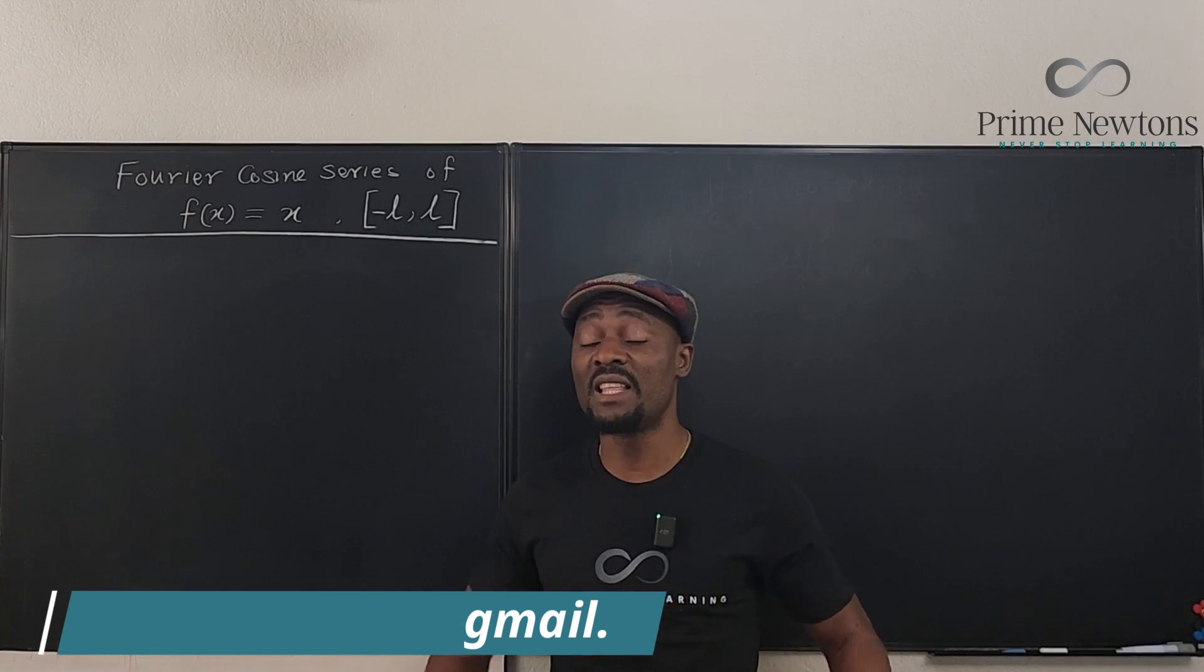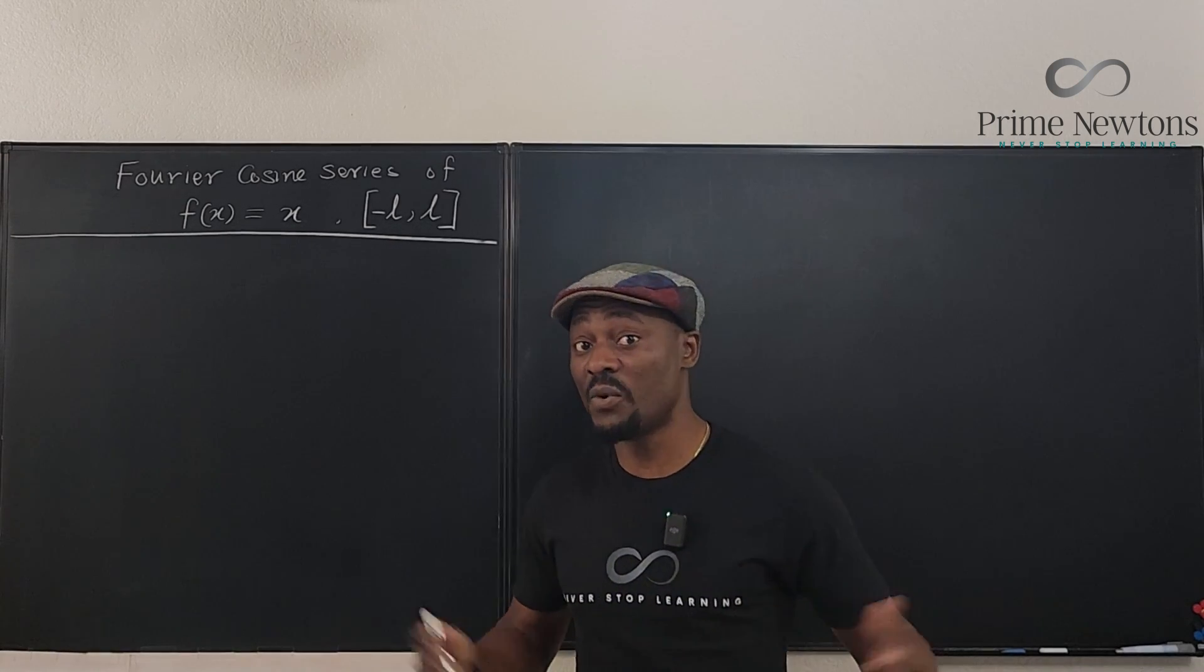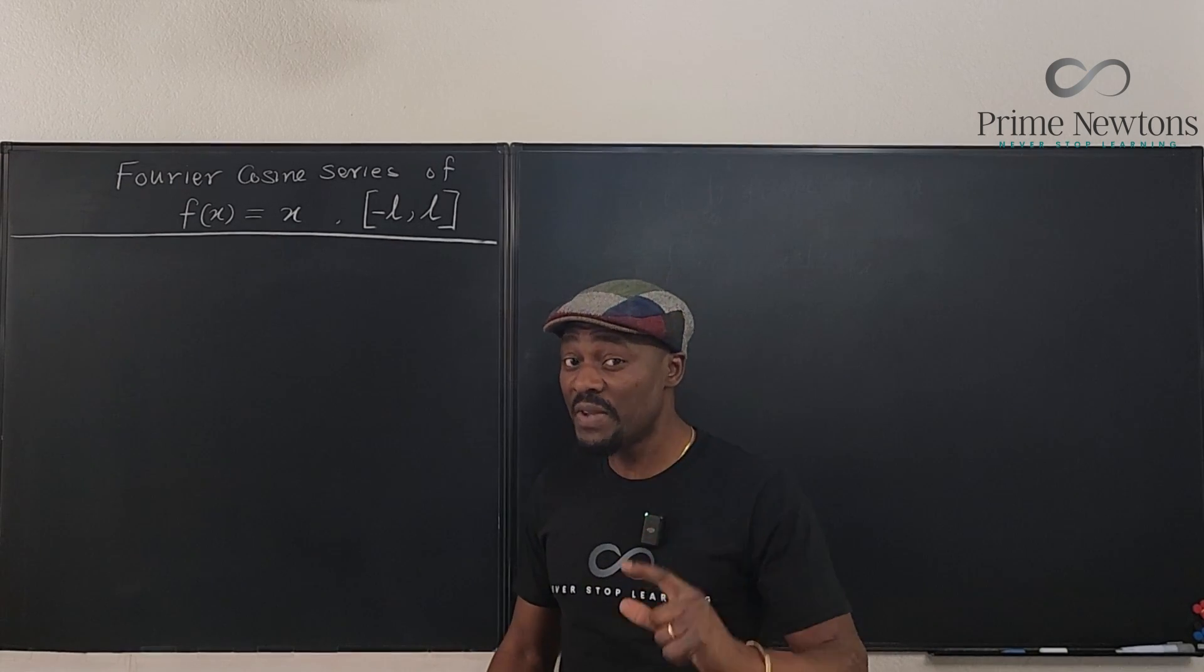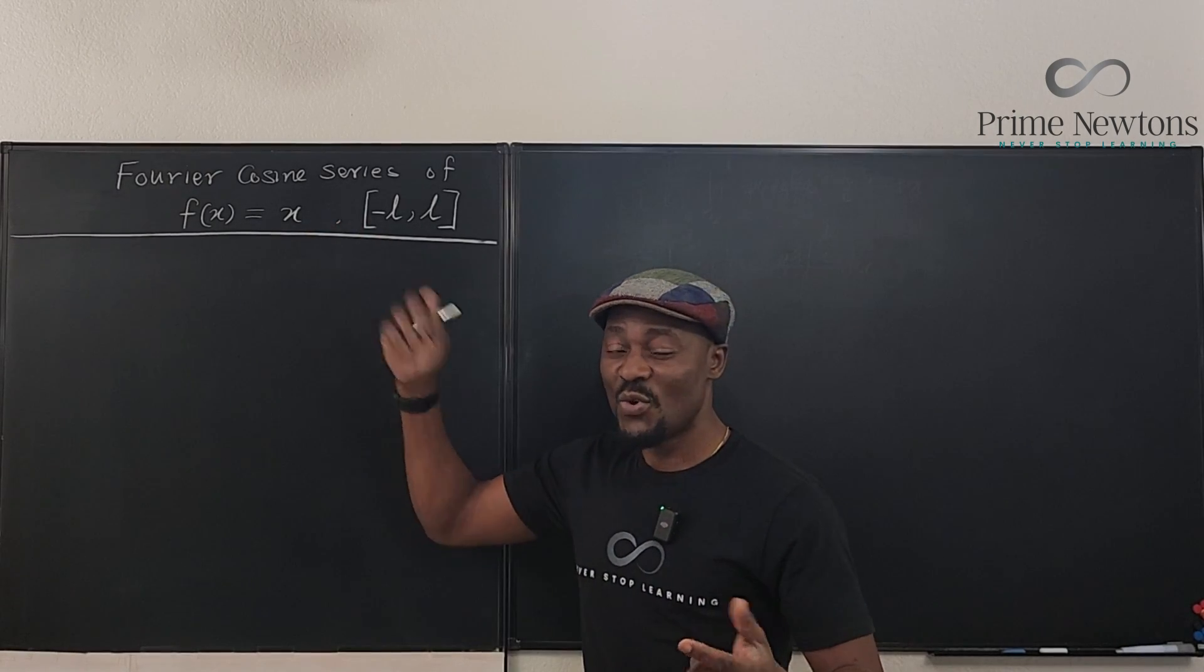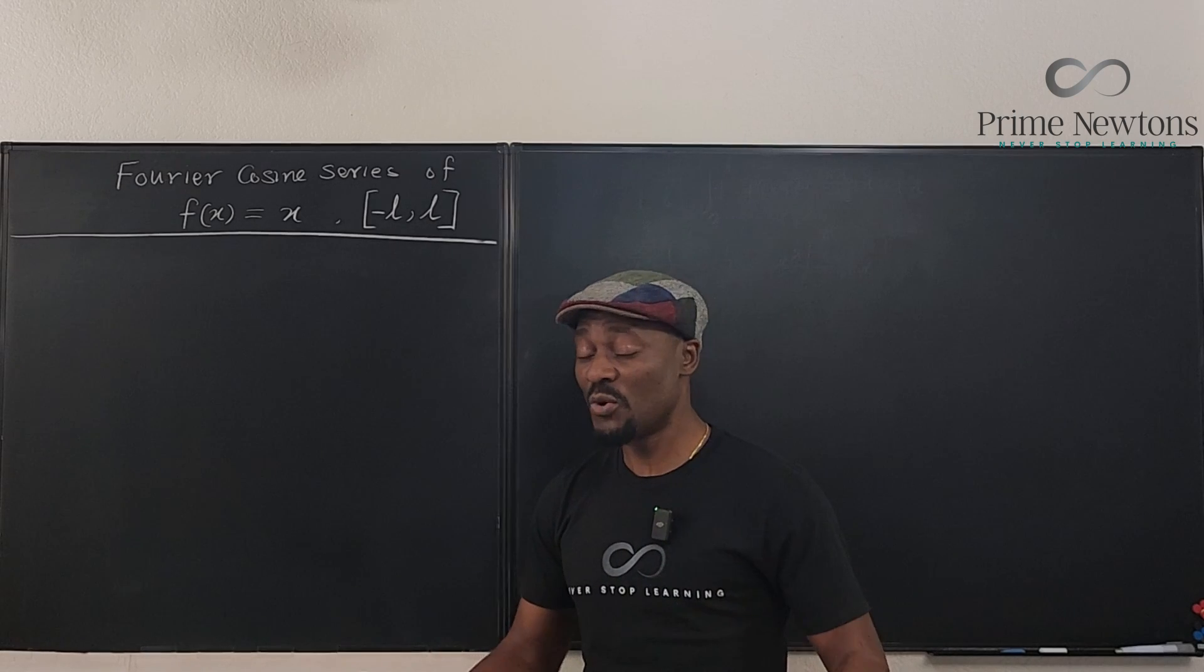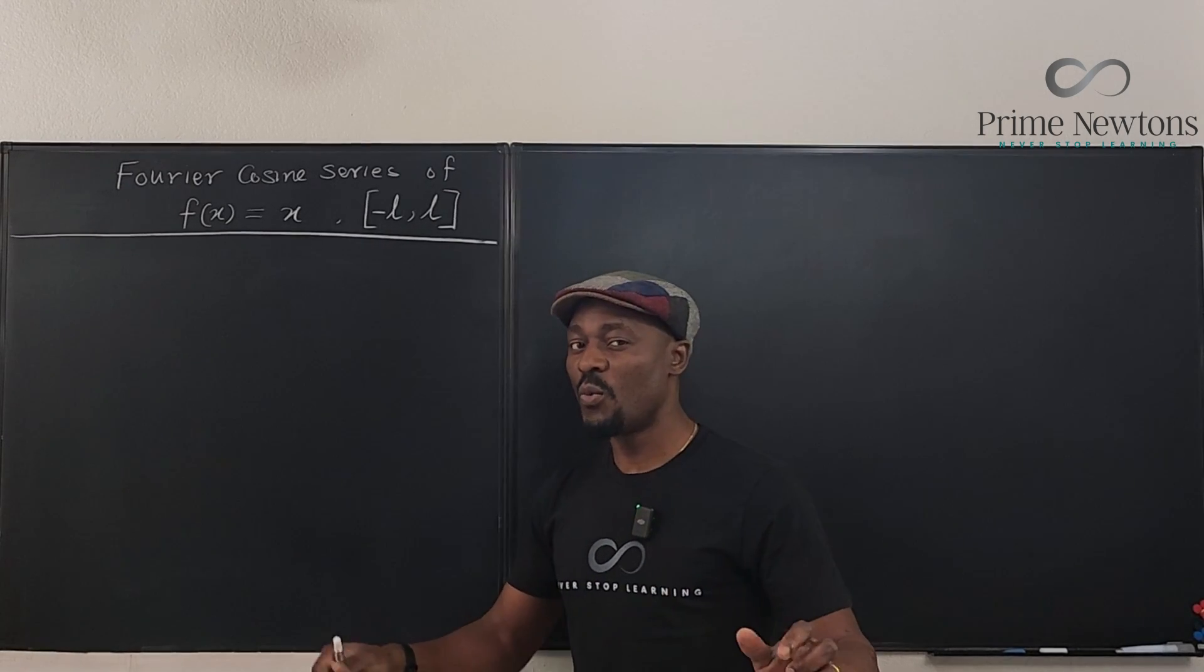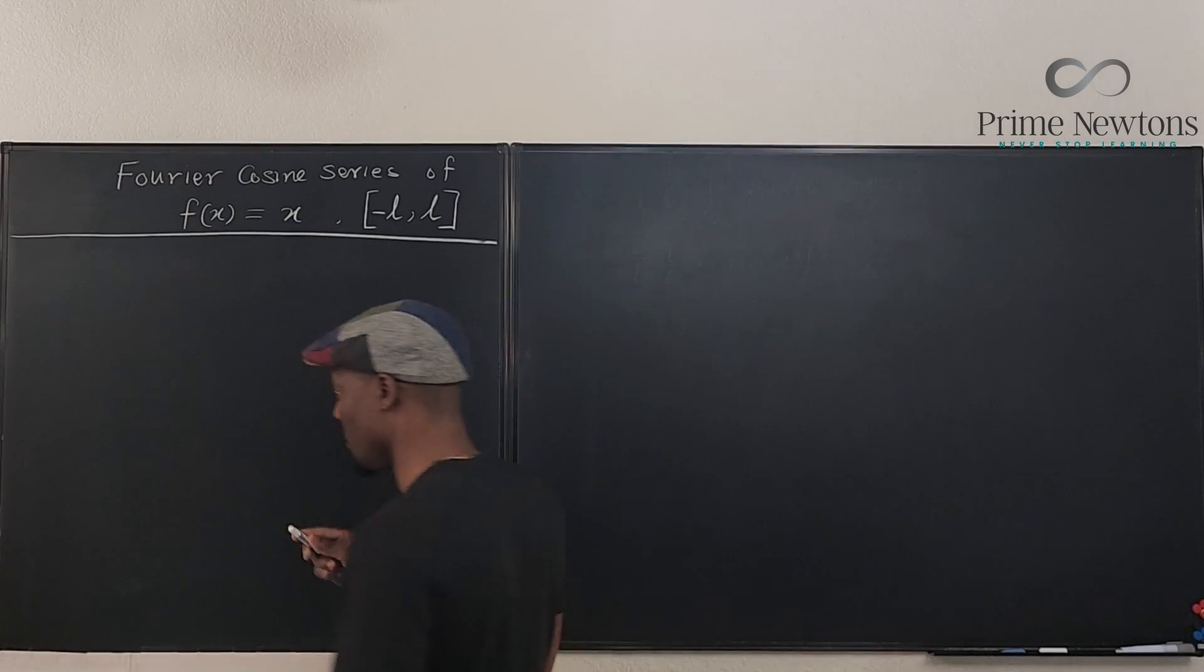The formula for obtaining the Fourier cosine series for any function. It's important to know how to obtain your coefficients. In the case of cosine, you have two different coefficients: the initial and the one that is general. So what are you supposed to know? Just know that the cosine series for any function looks like this.